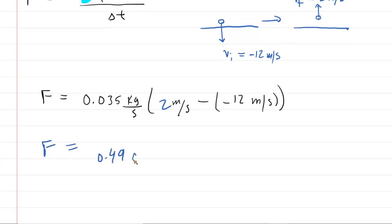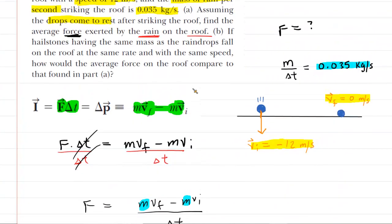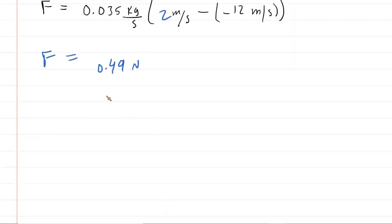Now, we don't need a numerical answer, just a conceptual answer. And the question, again, wanted us to determine what would be true about the average force on the roof. We just showed that the average force would be greater. So the hailstone would be pushing down on the roof with a greater force.